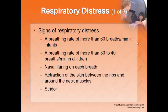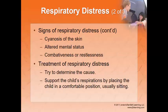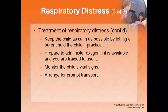Signs of respiratory distress: any respiratory rate over 60 is a red flag at any age; children breathing more than 30–40 times per minute is concerning. Also watch for accessory muscle use like nasal flaring and retractions, stridor on inspiration indicating partial airway obstruction, cyanosis, altered mental status, and combativeness or restlessness — signs the brain is fighting for oxygen. Determine the cause and position the child sitting upright if they're having trouble breathing.